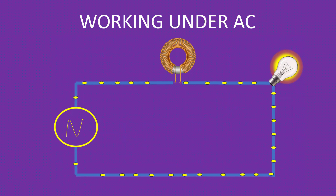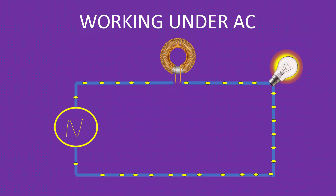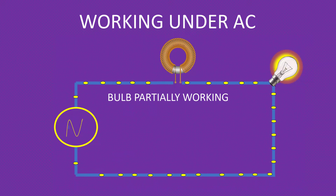If you remove the battery and connect the circuit with the same capacity of AC supply, what will be the effect? You can see the bulb is partially lit — it will not light up to its full potential. The bulb will be partially lit at all times.